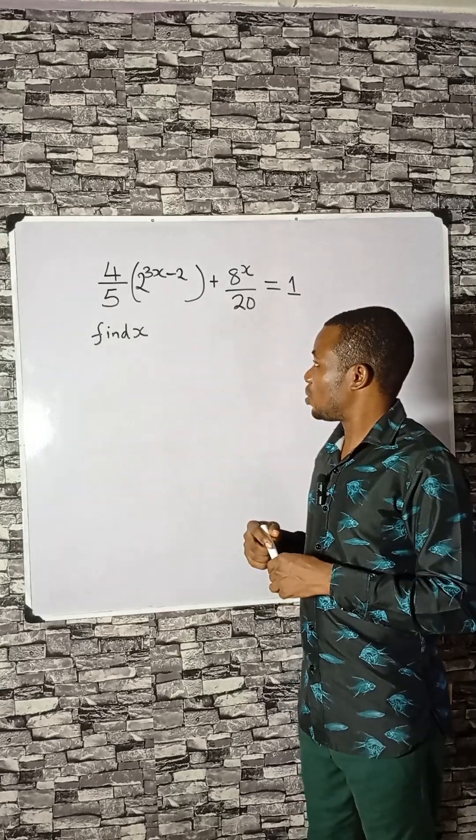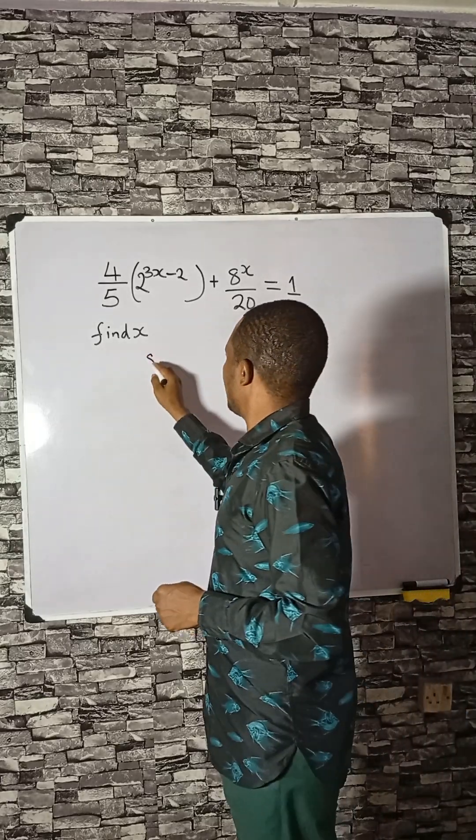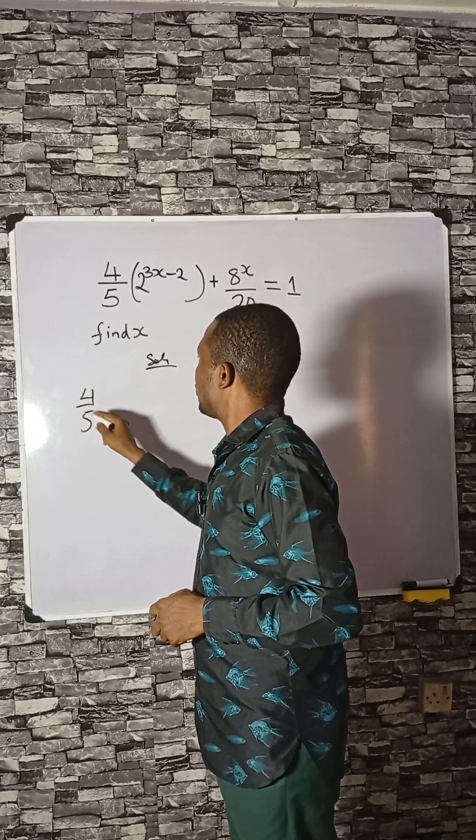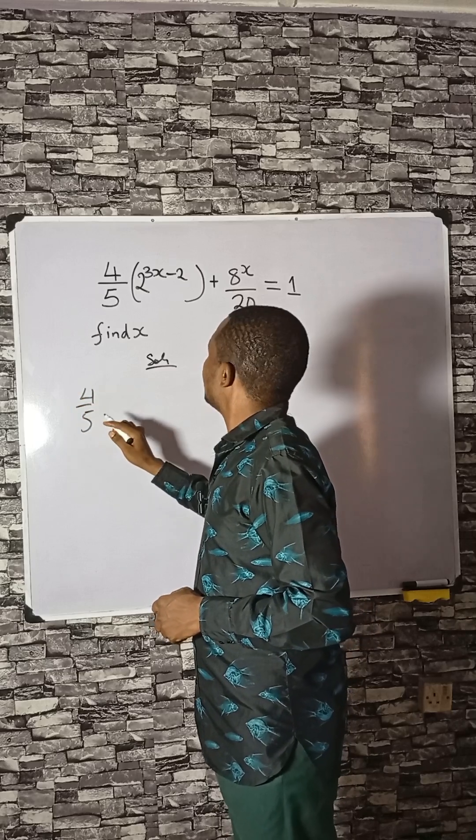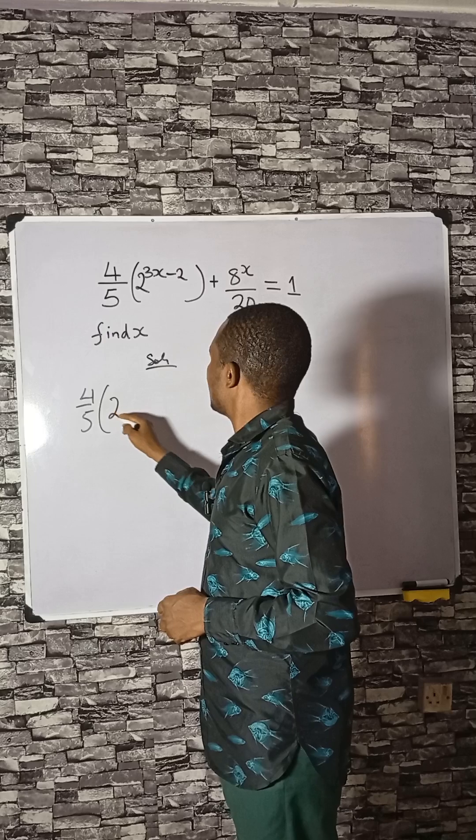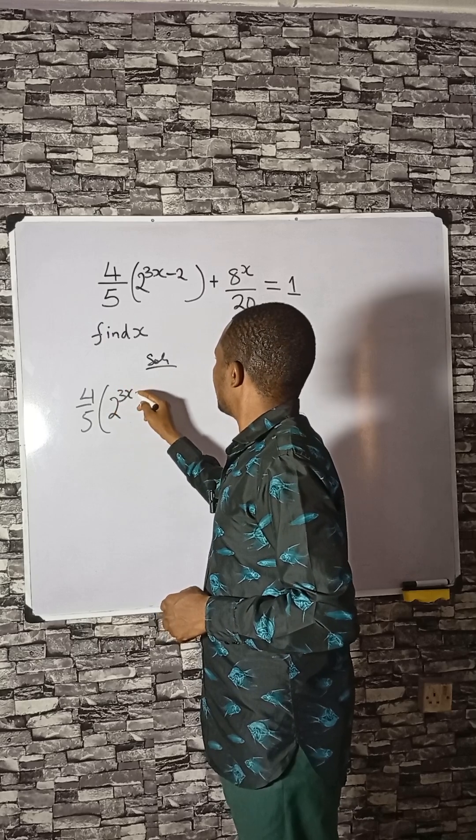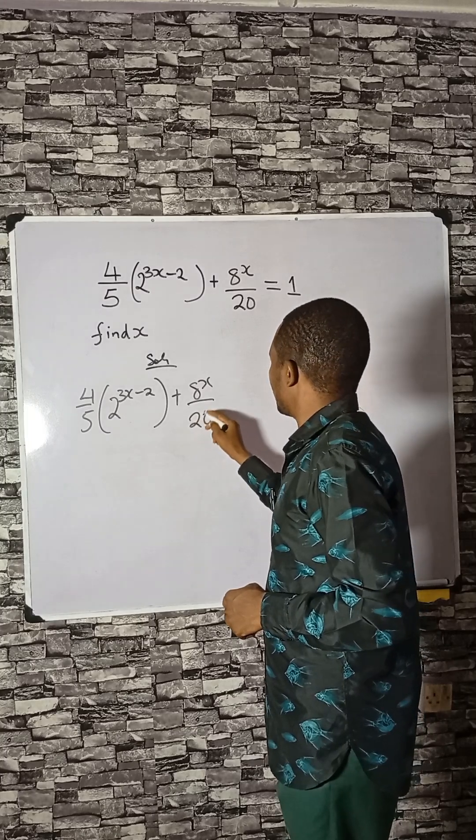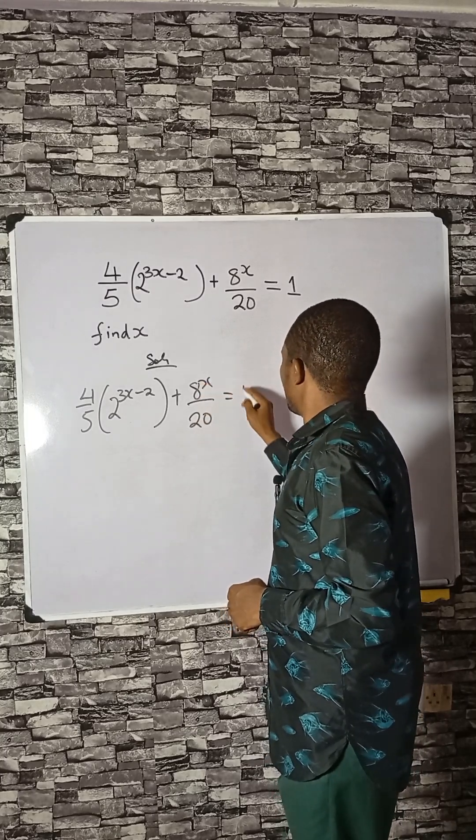Let's find the value of x in this expression. 4 divided by 5 times this equals to 1.